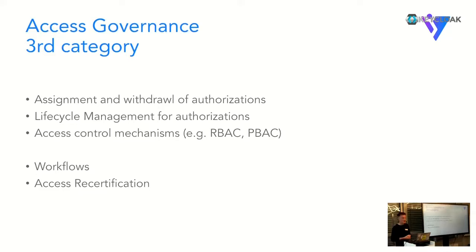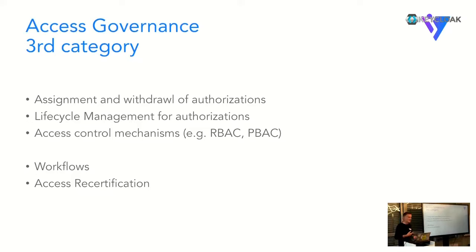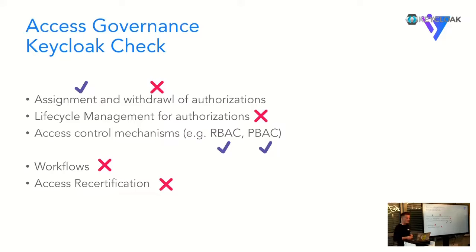This also comes together with workflows - approval workflows where somebody requests access to a system, gets a role assigned, but the role only gets assigned after approval, which can be one, two, or even three steps. The more critical the systems are - for example in critical infrastructure - we've seen up to three-step approval workflows before a role gets assigned, and with external people it may be even more. I think this is clearly not the focus of Keycloak.